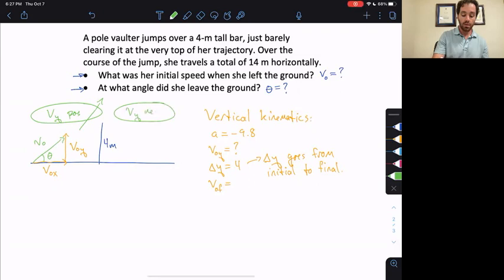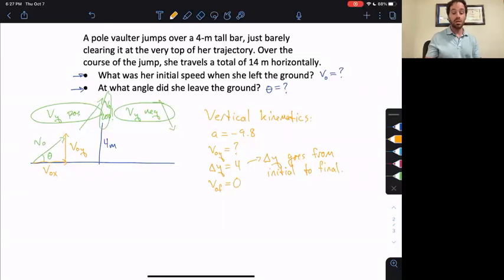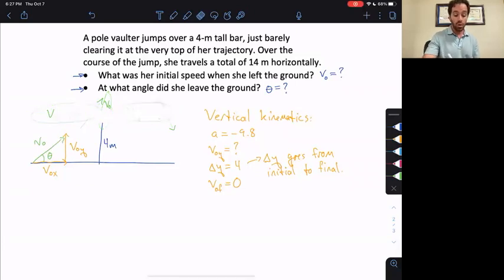And if delta y goes from the initial to the final, what that means is that v-f, that must be talking about the vertical velocity at the time when you have reached the height of 4 meters. Over here, v-y is positive because the person is going up. But over here, v-y is negative because the person is going down. What is in between positive numbers and negative numbers? It's 0. So at this point right here, v-y is 0.